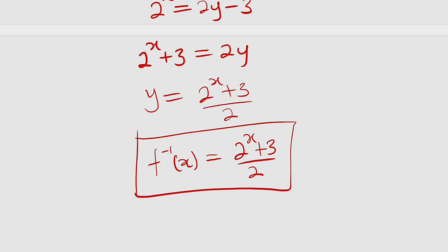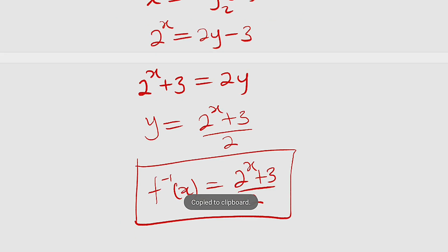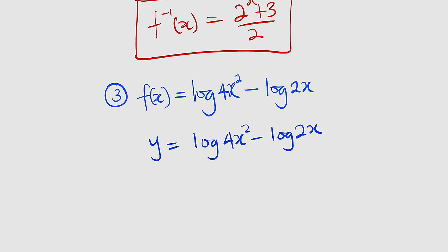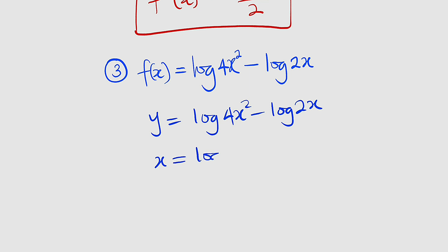Now let us take problem number 3. Problem number 3 is f of x equal to log of 4x squared minus log of 2x. We are going to first replace f of x with y. So we have y equal to log of 4x squared minus log of 2x. Now let us switch x and y. We have x equal to log of 4y squared minus log of 2y.